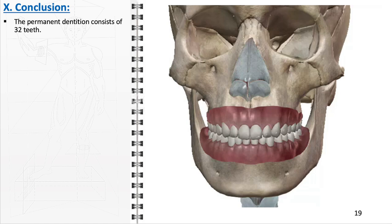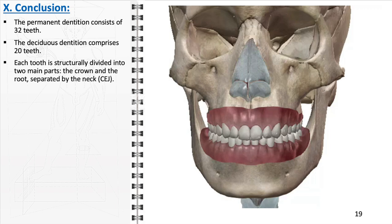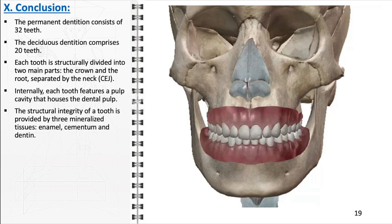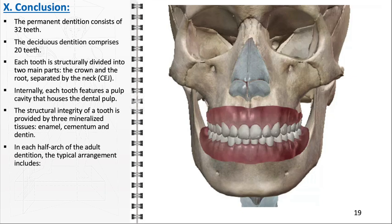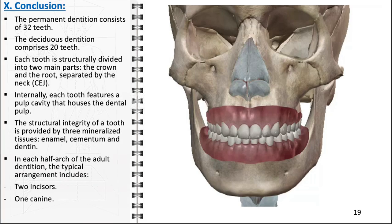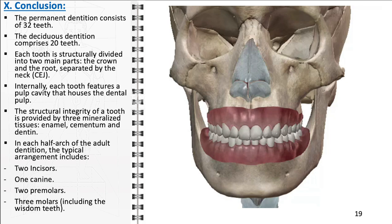In conclusion, dental anatomy is a fundamental aspect of oral health, encompassing the study of the structure and function of teeth. The permanent dentition consists of 32 teeth, while the deciduous dentition comprises 20 teeth. Each tooth is structurally divided into the crown and the root, with the cemento-enamel junction marking the transition between them. Internally, each tooth features a pulp cavity housing the dental pulp. The structural integrity of a tooth is provided by three mineralized tissues: enamel, cementum, and dentin. In each half-arch of the adult dentition, the typical arrangement includes two incisors for cutting food, one canine for tearing, two premolars for grinding, and three molars including the wisdom teeth for grinding food.